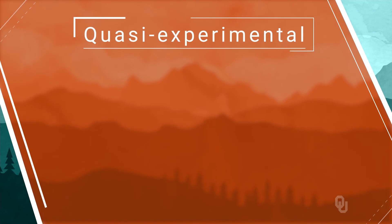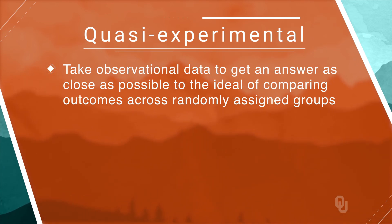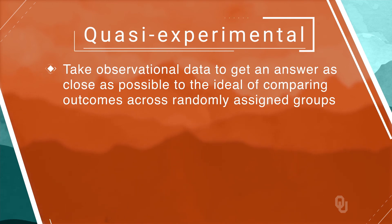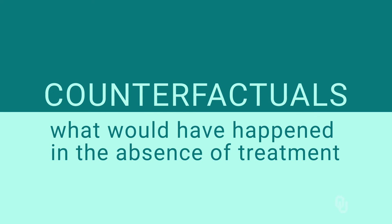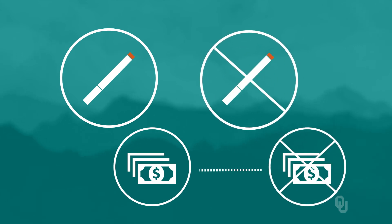This seems like a serious problem, and it's precisely what our course addresses. Our methods are called quasi-experimental because they take observational data and try to get an answer as close as possible to the ideal of comparing outcomes across randomly assigned groups of treated and untreated units. Another way to talk about all this is to talk about counterfactuals — what would have happened in the absence of treatment. When the treatment is not randomly assigned, the outcome of the untreated is not a valid counterfactual. In the smoking example, the average earnings of non-smokers is not a valid estimate of what smokers would earn if they gave up smoking. Each of the four quasi-experimental methods we will learn attempts to create a valid counterfactual for the treated group, so we can compare outcomes and get a valid estimate of the treatment effect. The different methods vary in assumptions and applicability, and one thing we will emphasize is determining which is best for a given situation.